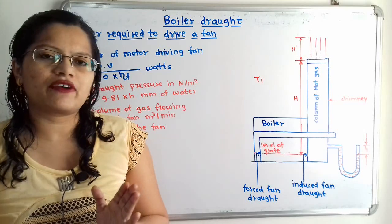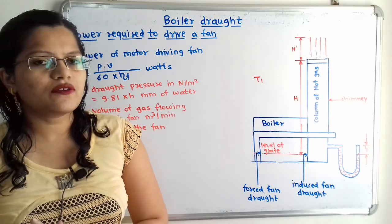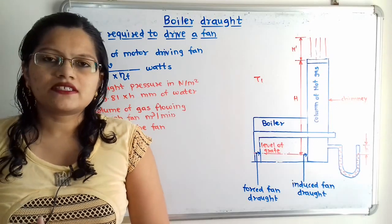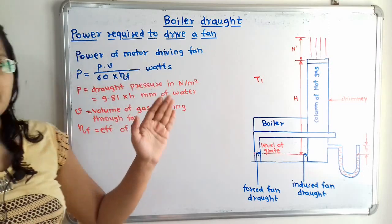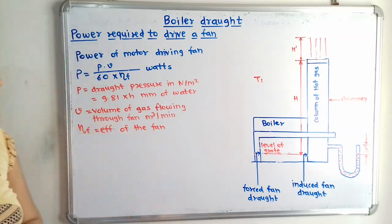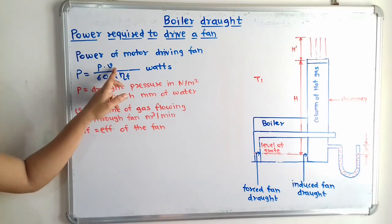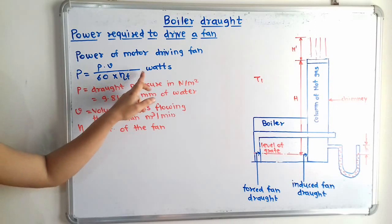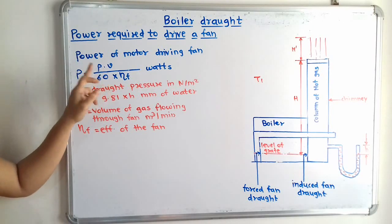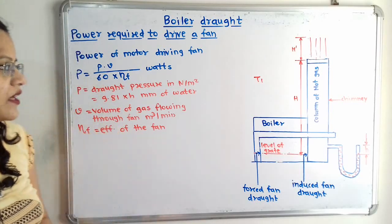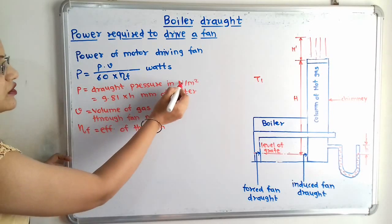The power required to drive a fan is the power needed to do internal work on air or flue gas to deliver a certain volume. Since the fan is driven by a motor, the power of the motor driving the fan is: P = p × V / (60 × η_f), where the unit is watts. Here, capital P is the power, and small p is the drop pressure.